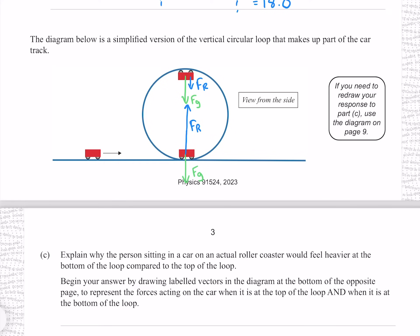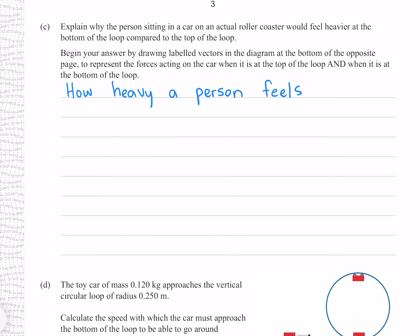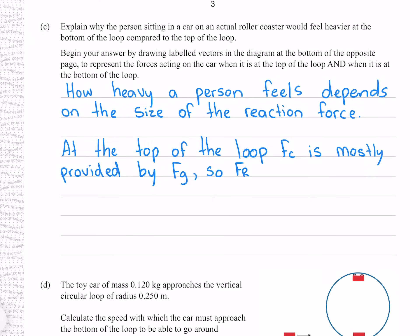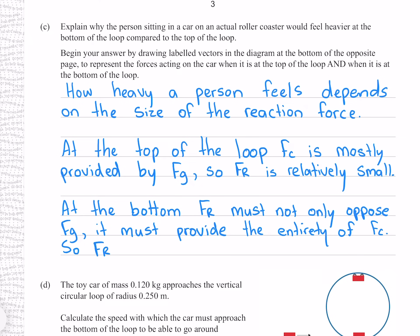How heavy a person feels depends on the size of the reaction force. At the top of the loop, FC is mostly provided by FG, so FR is relatively small. At the bottom, FR must not only oppose FG, it must provide the entirety of FC, so FR is relatively large.